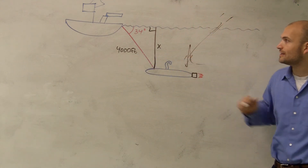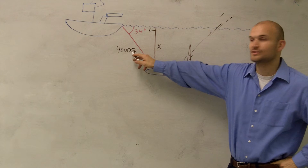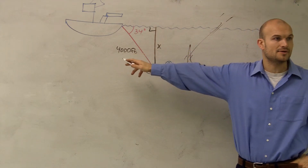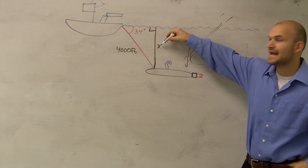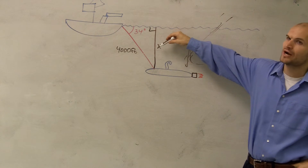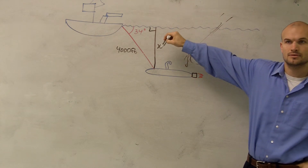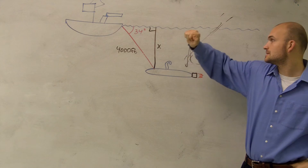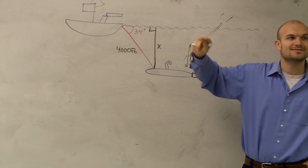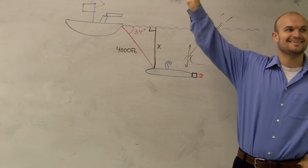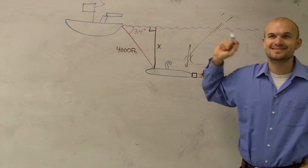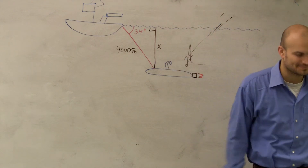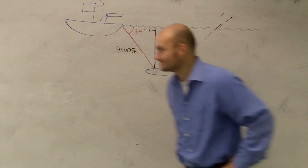If I look at this angle, we obviously know this is going to be our hypotenuse, because this is directly opposite of the right angle. And then this side — is that going to be our adjacent or our opposite? Some students say adjacent, some say opposite. It's adjacent.